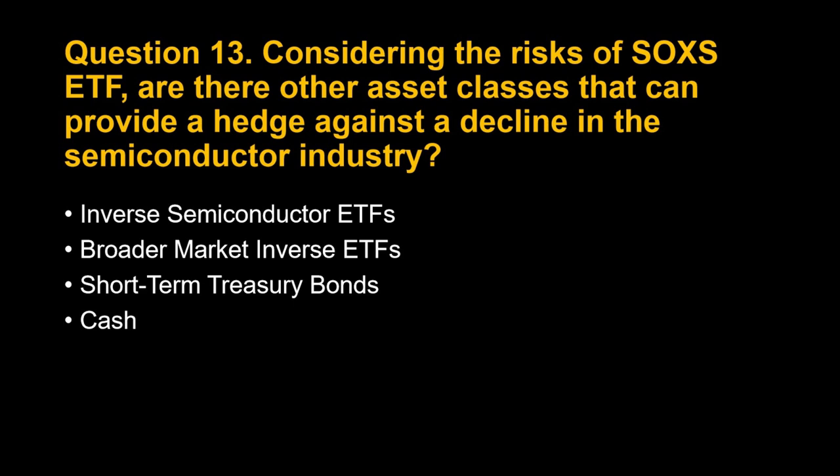Examples of broader market inverse ETFs include ProShares Short S&P500 (SH) and Direxion Daily S&P500 Bear 3X Shares (SPXS). 3. Short-Term Treasury Bonds: Treasury bonds, especially short-term maturities, tend to have an inverse relationship with stocks. When stocks decline, investors often seek the perceived safety of bonds, driving their prices up. Short-term treasuries can offer some protection against a decline in the semiconductor industry, particularly if caused by broader economic factors. They typically offer lower potential returns but also lower volatility, making them a potentially good portfolio stabilizer.